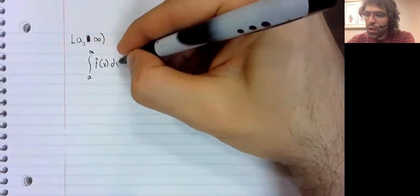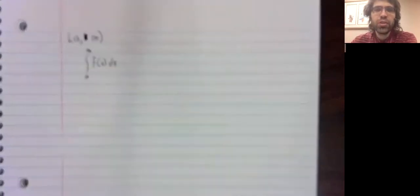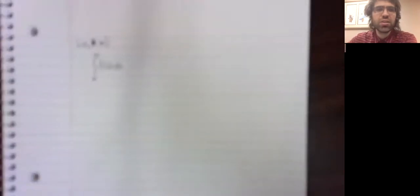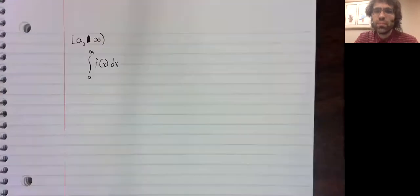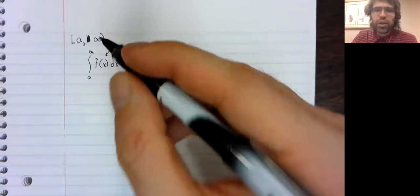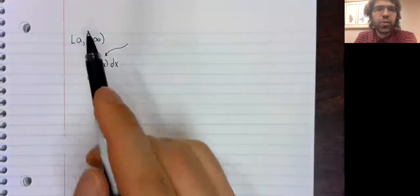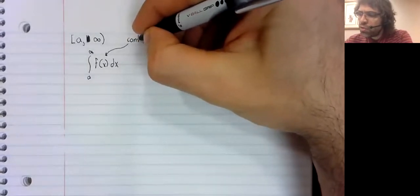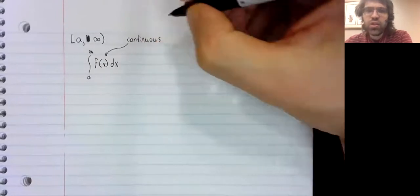We will keep our two types of improper integrals distinct. That is to say, if we're integrating over an infinite interval, we will assume that the function is continuous.